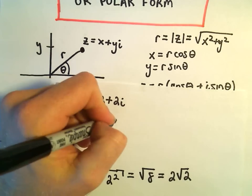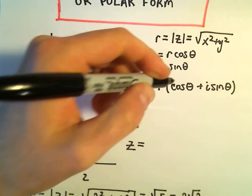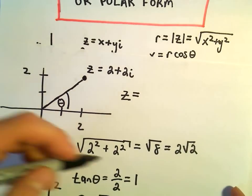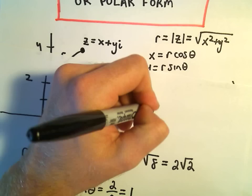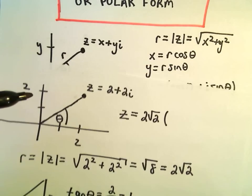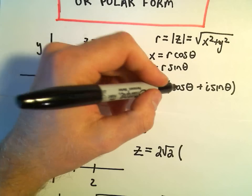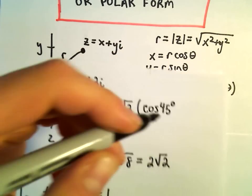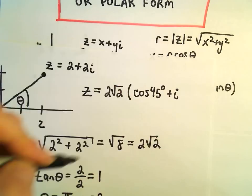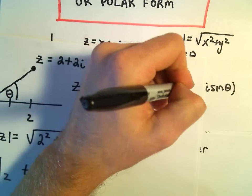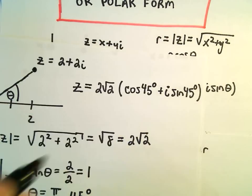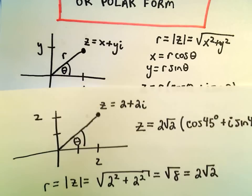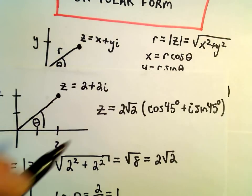And now we're in business. We can rewrite our complex number. It says we write r. So the r value we said was 2 root 2. And then we simply take cosine of theta, which is cosine of 45 degrees plus i times sine of 45 degrees. And now this is what we want. This would be our final solution here.